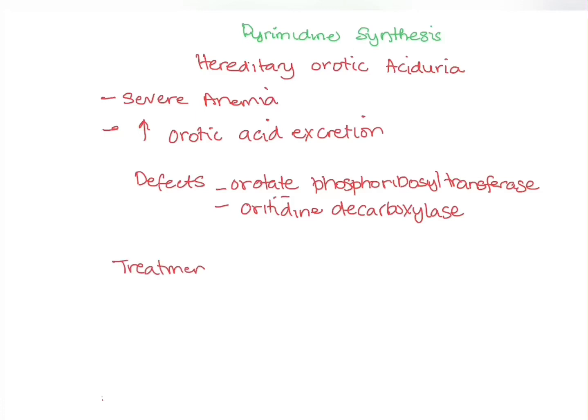Orotate is converted to OMP, and then from OMP to UTP and CTP. If there's a defect in the formation of OMP, this will also affect CTP and UTP. For treatment, we usually give uridine, which enables the formation of UTP and CTP.